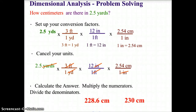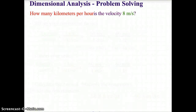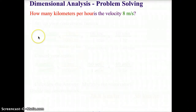Let's look at one more example. We're looking at how many kilometers per hour is the velocity 8 meters per second. Here we're going to change meters to kilometers and also change seconds to hours. Why don't you try this problem on your own — pause the video — and then come back and we'll go through it together.